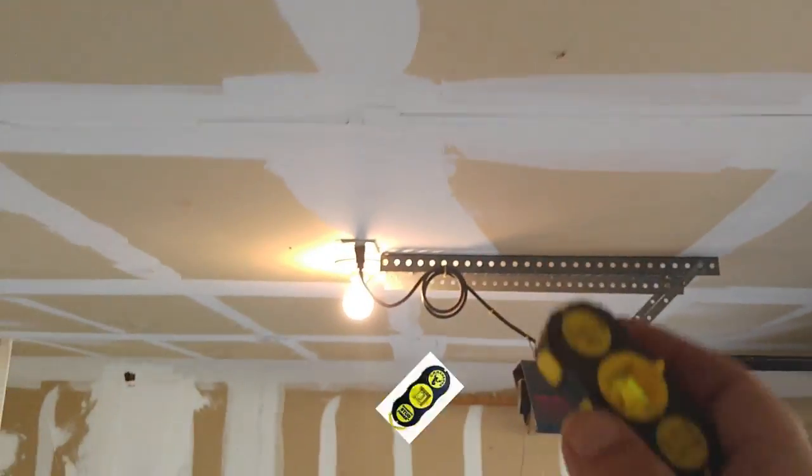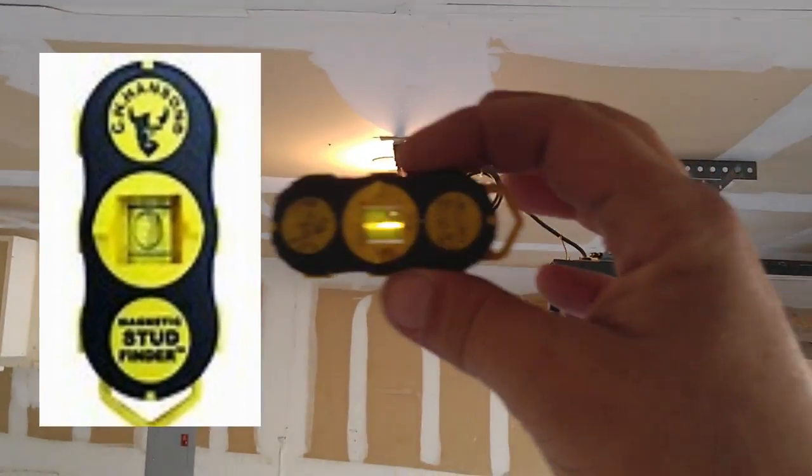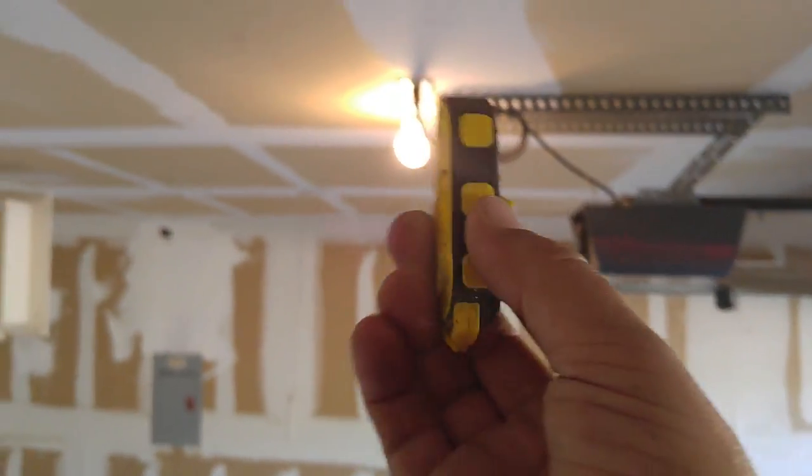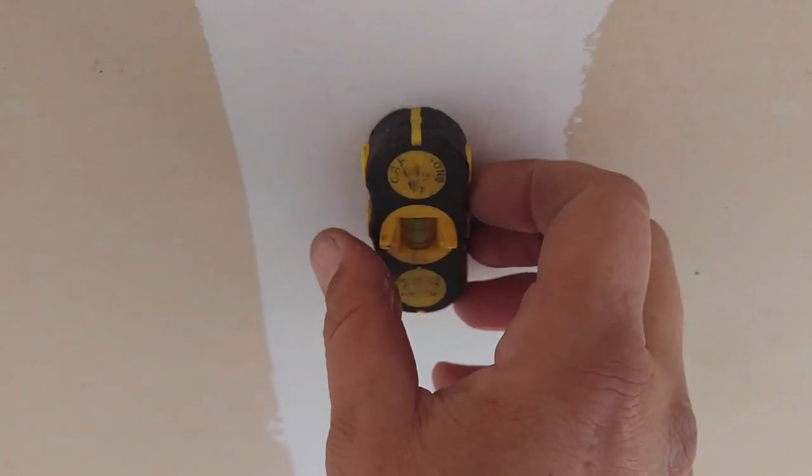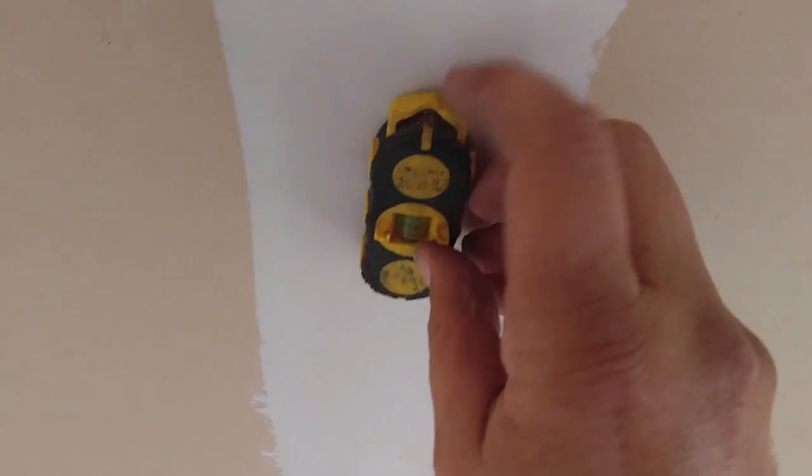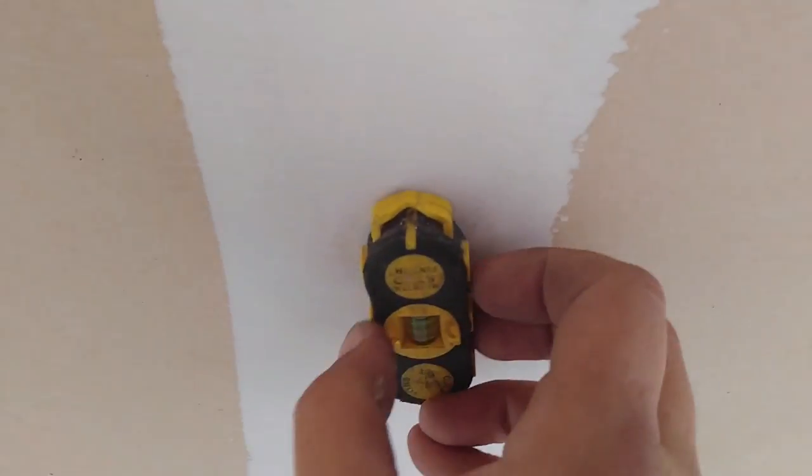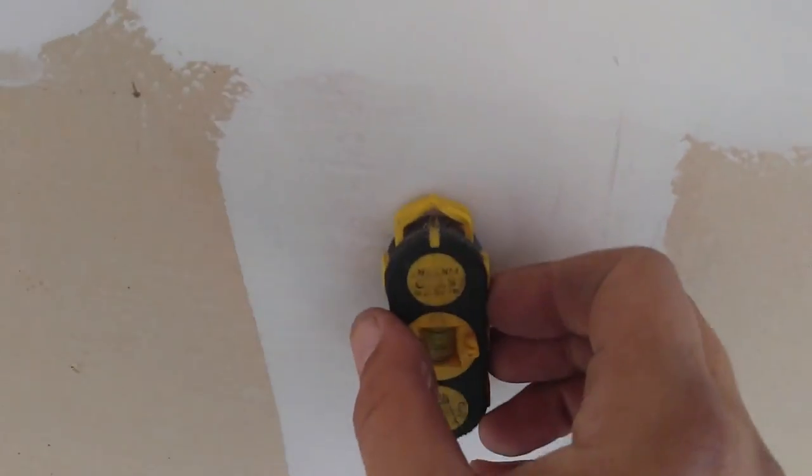I mean, really when in doubt I use a magnetic stud finder, this thing is pretty awesome. So I mean you can always stick it on the ceiling if you're not sure. It's sticking right there, so I know there's a screw there.